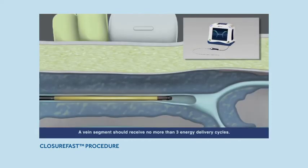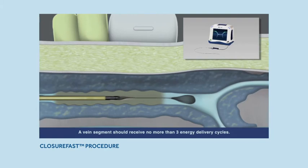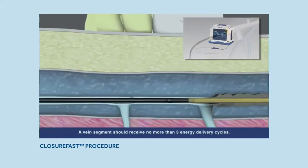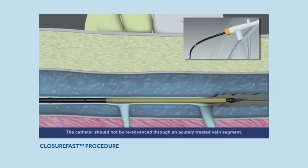Temperature control is a critical aspect of the procedure. The Closure RFG generator is designed to ensure the energy delivered to the catheter is consistent and controlled. For a successful procedure, the catheter uses segmental ablation technology to deliver precise, uniform radiofrequency energy to the heating element.